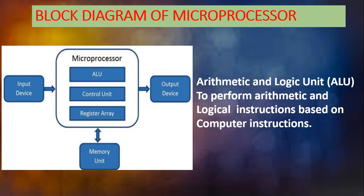The ALU — Arithmetic and Logical Unit — performs arithmetic and logical instructions based on computer instructions. The ALU is solely responsible for performing all types of mathematical calculations. Arithmetic operations include addition, subtraction, multiplication, and division — the ALU performs all of these. It also performs logical calculations: AND, OR, NOT. All calculation-based instructions are executed by the ALU only.